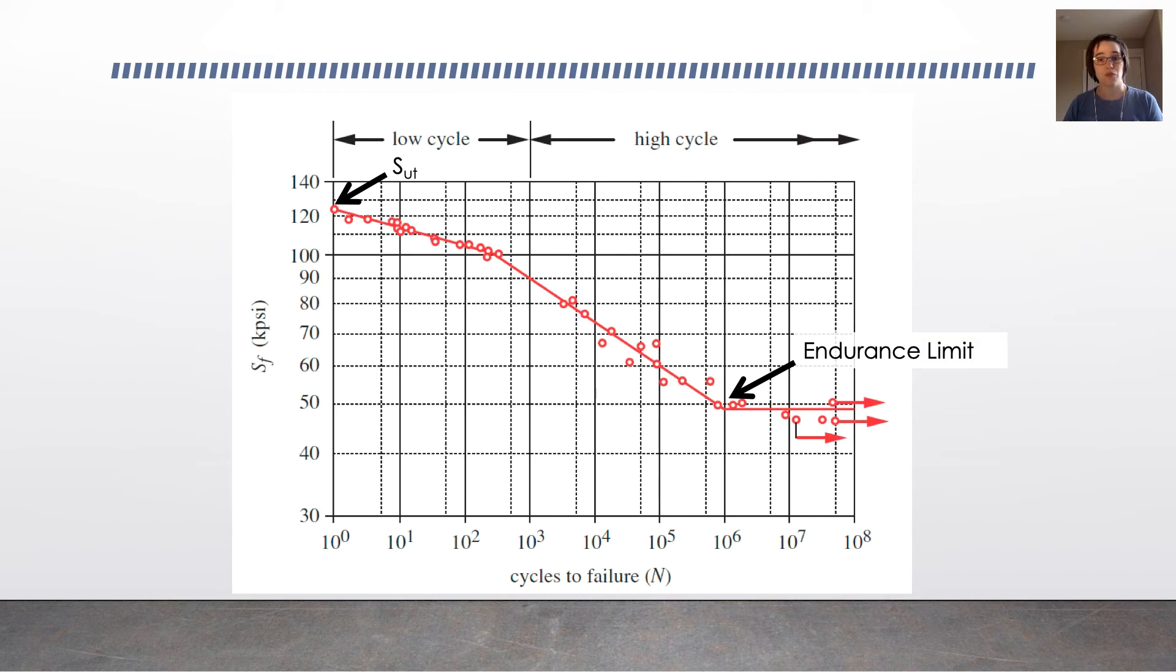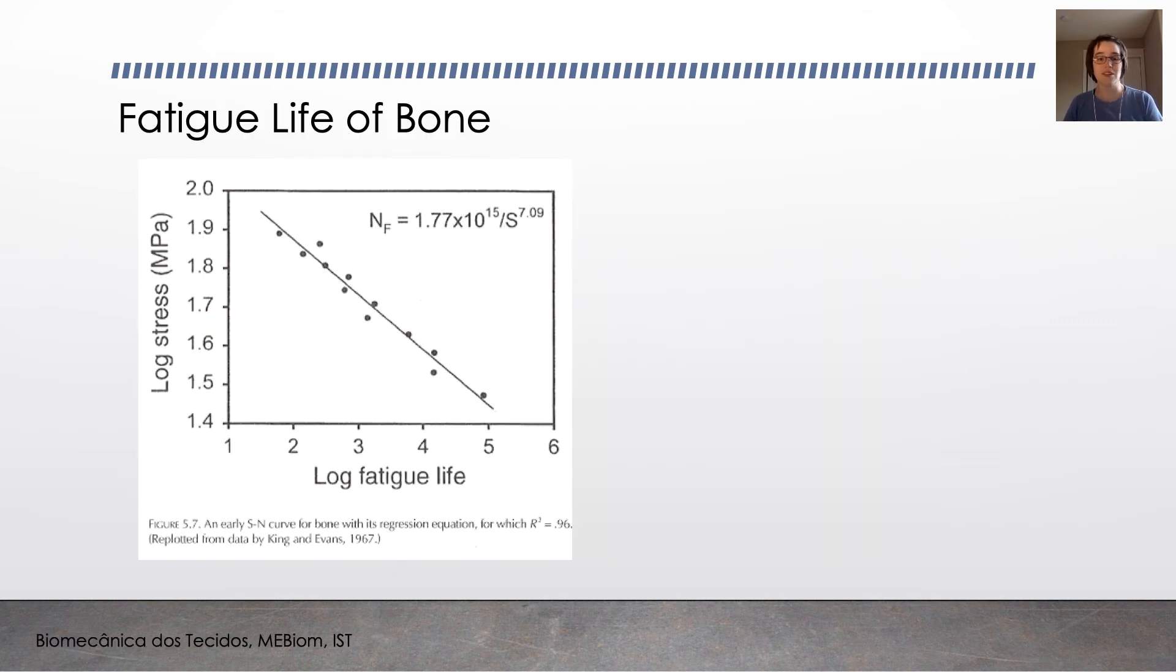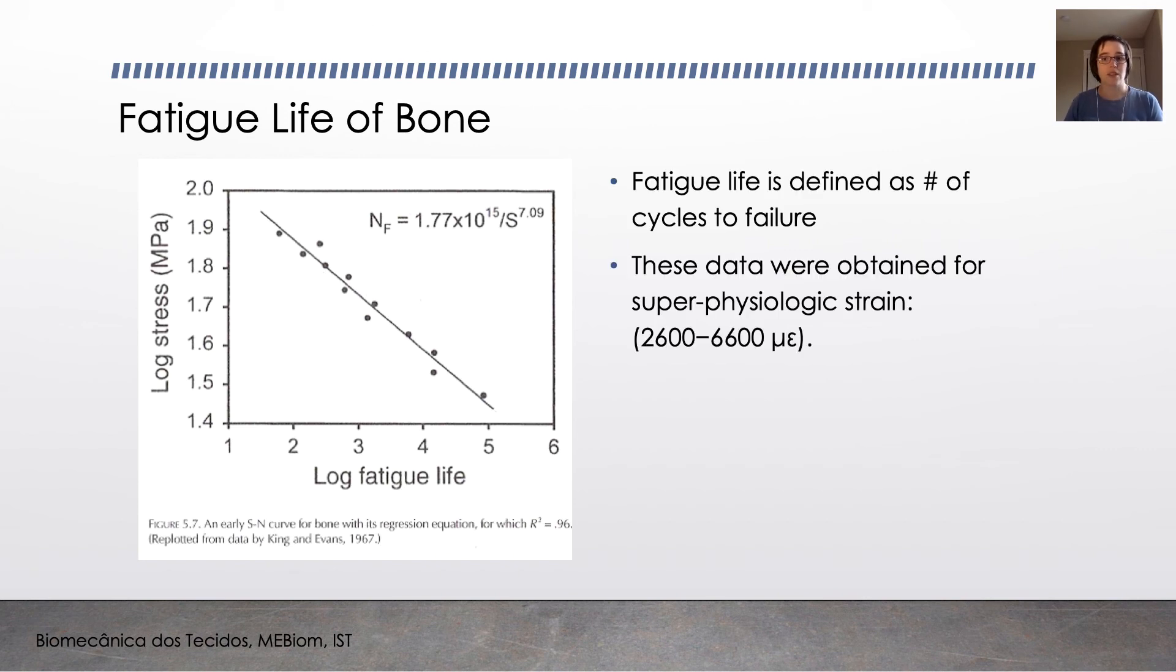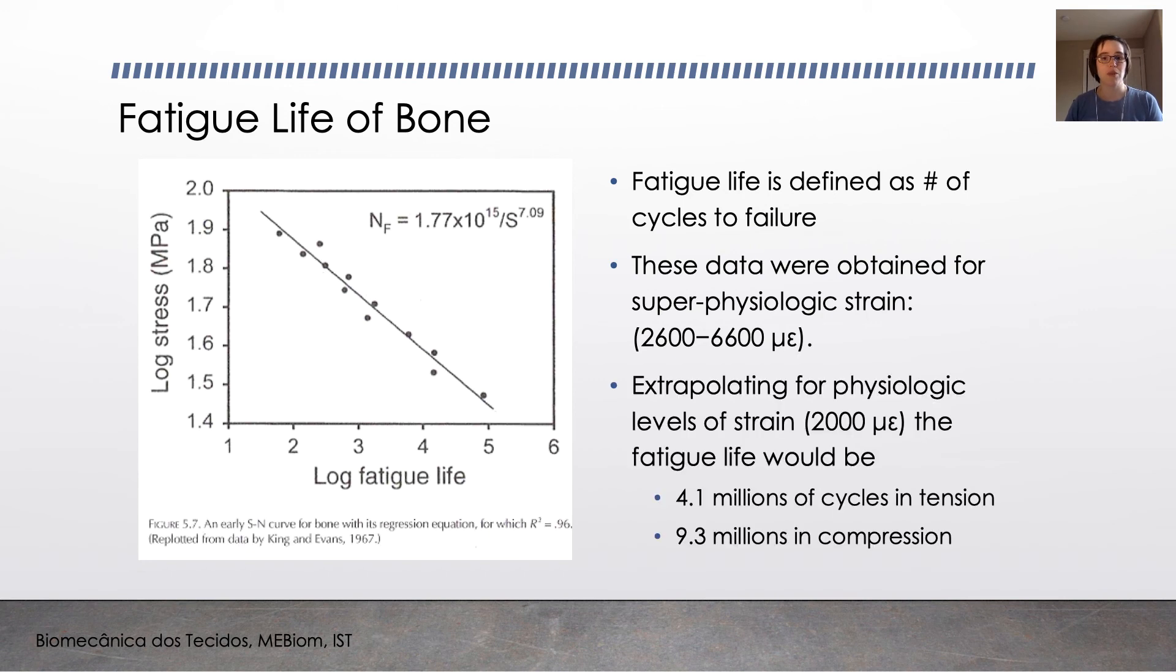If you do this sort of analysis for bone, you'll get a plot like this. You'll notice that it doesn't have an endurance limit. Bone doesn't have an endurance limit. These data were collected at super physiologic strains, much greater than anything the body would typically experience. But if you extrapolate them for physiological levels of strain, about 2,000 microstrain, the fatigue life would be 4.1 million cycles in tension and 9.3 million cycles in compression, which is not surprising since bone is better in compression than in tension.